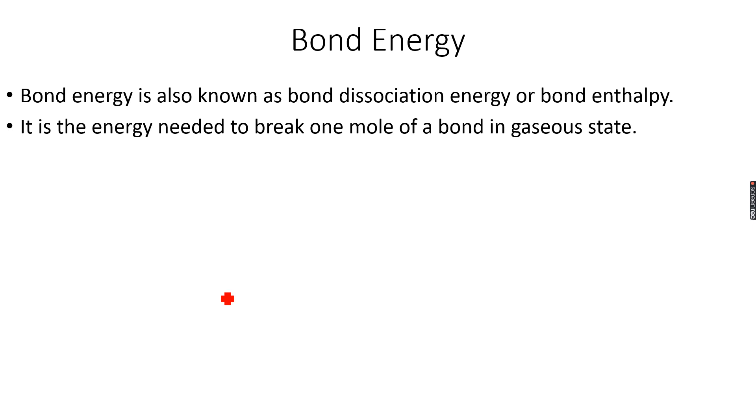So what I mean by this is, for example, we have O2 gas. So what is O2 exactly? O2 is oxygen double bonded to another oxygen. So one mole of a bond, you can see that this is one mole of a bond because there is only one double bond. So the bond energy needed to break this double bond to form gaseous oxygen atoms is called bond energy.